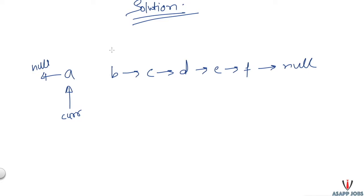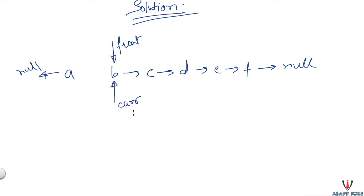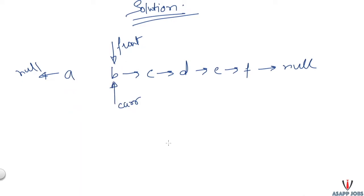So let's add another pointer that stores the address of the first element of the remaining linked list. Let's call this pointer 'front'. Before assigning A's next to null, we assign the front pointer to B. Now front is pointing to B. After assigning A's next to null, we can reach B using the front pointer. But now we're at B with no way to get back to the previous node.